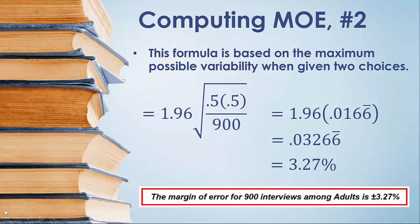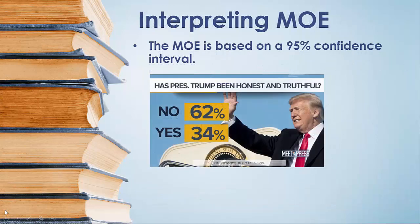Now let's talk about how we can make sense of what that margin of error represents. The margin of error is based on computing a 95% confidence interval. A confidence interval is a range of values that has a very high probability — a 95% chance — of including the true population value. From our sample data, we're trying to learn the true population value. Let's focus in on that 62% of people who believe that the president has not been honest or truthful.